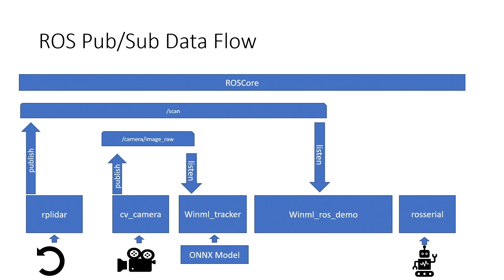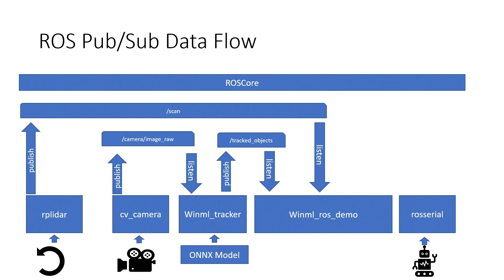Somebody needs to subscribe to the camera data to do something interesting with it. WinML is initialized saying please subscribe to the camera data coming off the camera. It runs it through YOLO and ultimately publishes an array of markers saying here's all the things I found. Our demo then subscribes to both those tracked objects and the LiDAR scan data, correlates them saying within those found objects who's the closest, and then issues a command velocity. ROS serial bridges that into the microcontroller, which is programmed with the Arduino IDE.